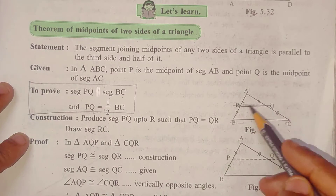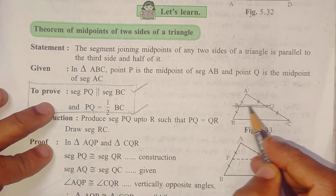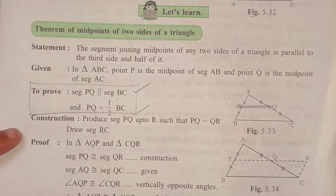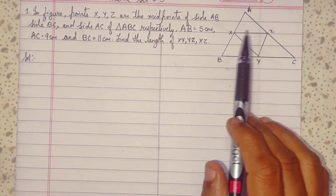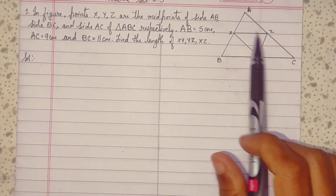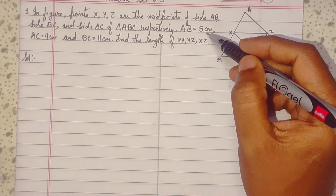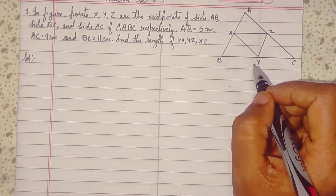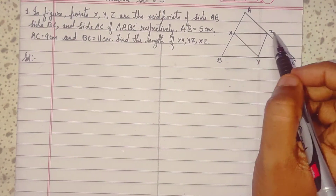X, Y, Z are the midpoints of sides AB, BC, and AC respectively. AB is 5 cm, AC is 9 cm, and BC is 11 cm. Find the lengths of XY, YZ, and XZ.